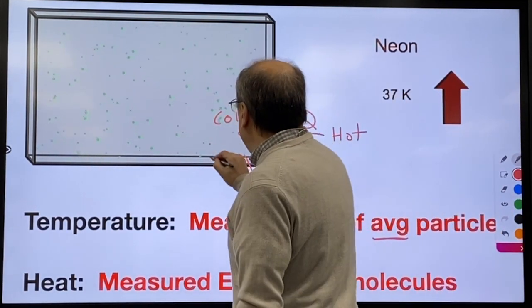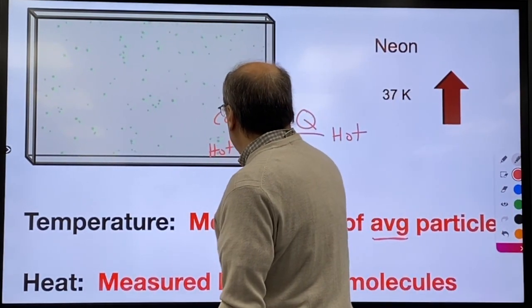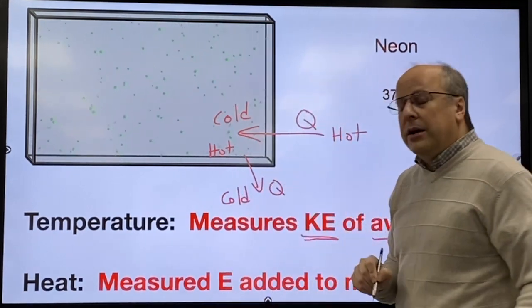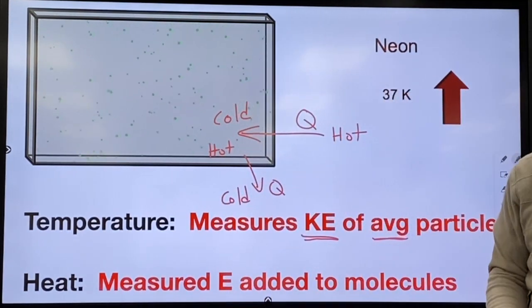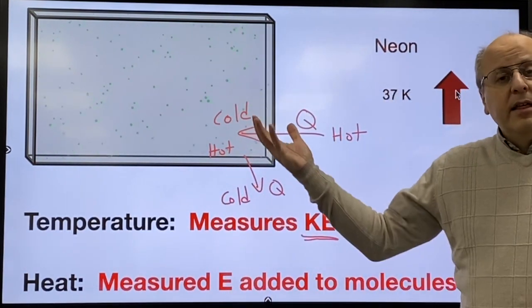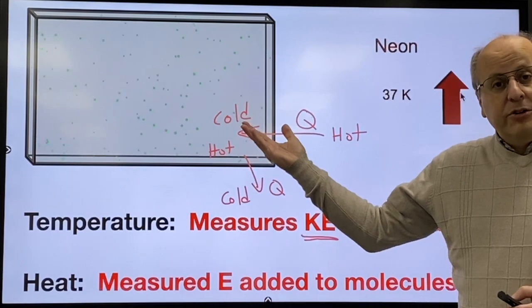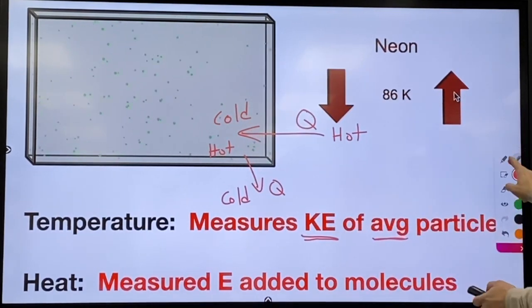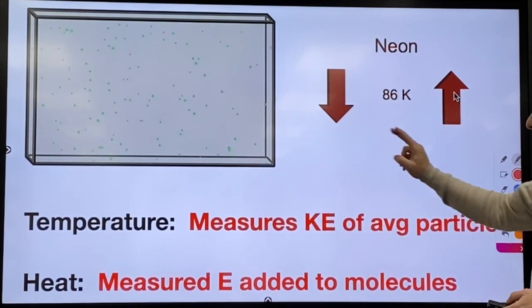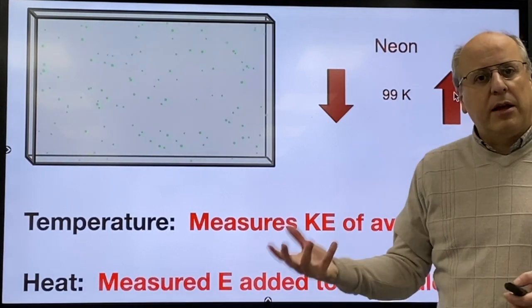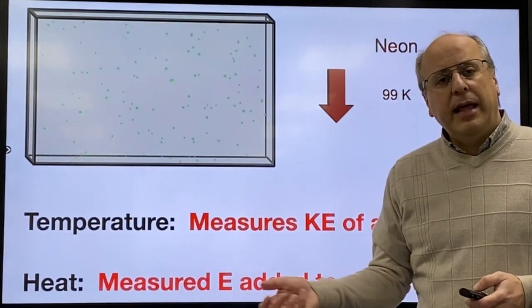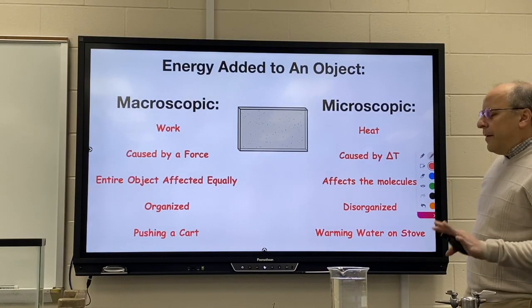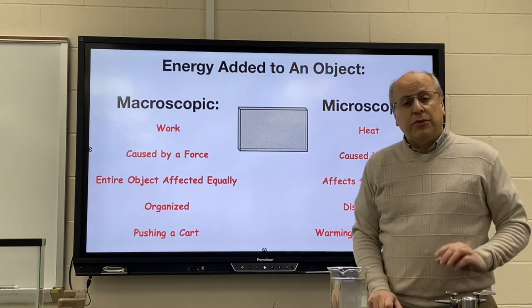To get heat out, you need it hot on the inside and cold on the outside — now the energy is going to leave. So heat can go in, which is positive heat, or heat can come out, which is negative heat.